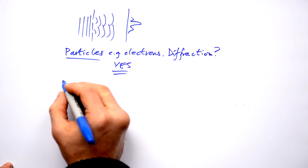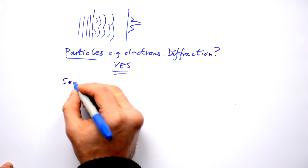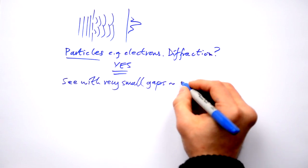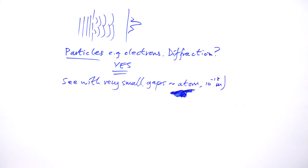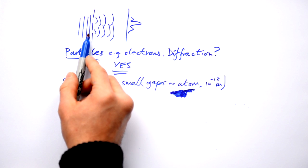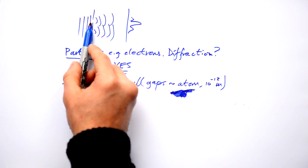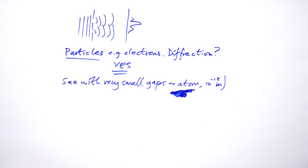Problem is that we only see it with very very small gaps. Talking about the size of an atom and you're talking about 10 to the minus 12 meters, talking about a picometer. So we don't see diffraction happening with electrons when we fire them through a gap that's a tenth of a millimeter or whatever for a diffraction grating or Young's double slit. It needs to be much much smaller than that.